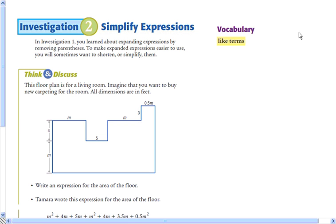I'm going to give you a few examples of how you combine like terms and simplify expressions here. This think and discuss shows a good reason why it's good to simplify the expressions. They're a lot easier to deal with. So this floor plan is for a living room. Imagine that you want to buy new carpeting for the room. All dimensions are in feet.